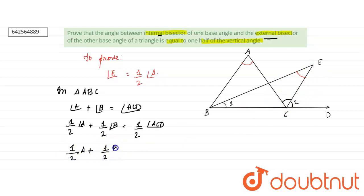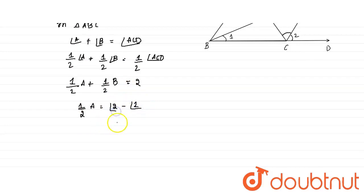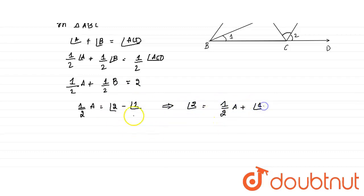So half angle A plus half angle B equals angle 2, and since half of angle B is angle 1, we get: half angle A equals angle 2 minus angle 1. Equivalently, angle 2 equals half angle A plus angle 1.